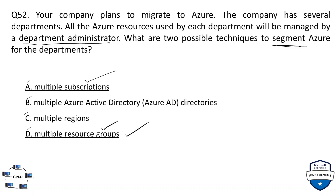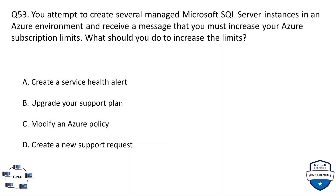You can use resource groups to group similar resources belonging to the same department — create a different resource group for each department. Similarly, you can create separate subscriptions for each department. A subscription handles accounting and billing separately, giving each department its own administrative overview as well as its own resource groups.